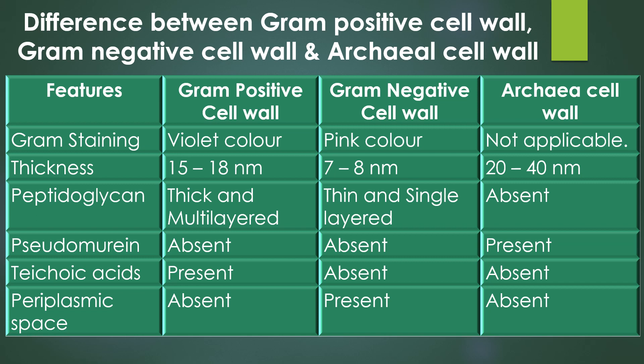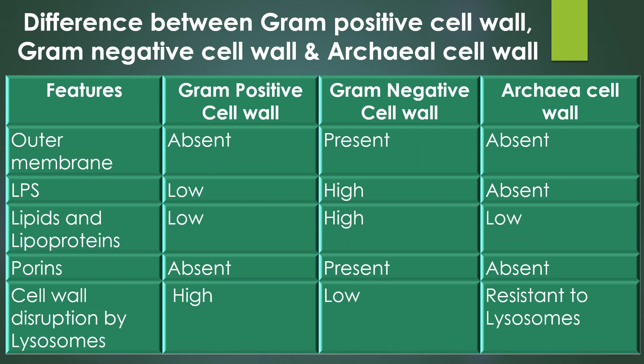Pseudomurein is present only in the archaea cell wall and absent in gram-positive and gram-negative bacterial cell walls. Teichoic acids are present only in gram-positive cell walls and absent in gram-negative and archaea cell walls. Periplasmic space is absent in gram-positive and archaea cell walls but present only in gram-negative cell wall. Outer membrane is present only in gram-negative cell wall and absent in gram-positive and archaea cell walls.